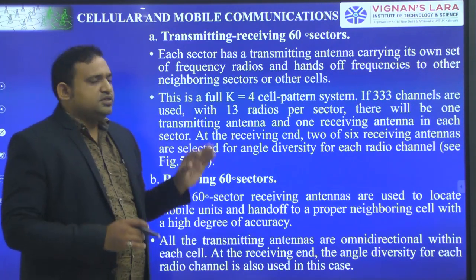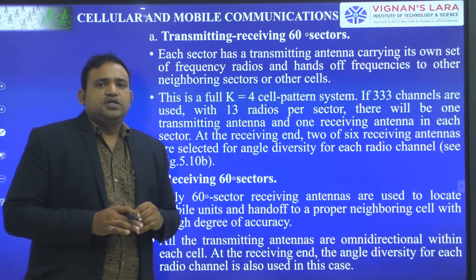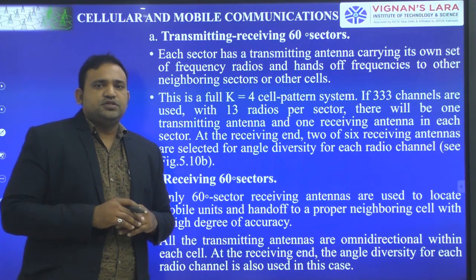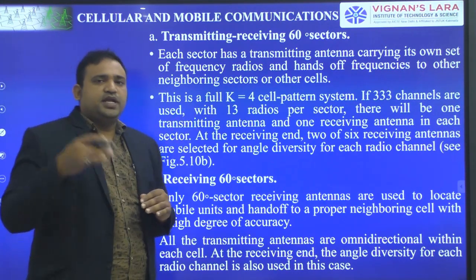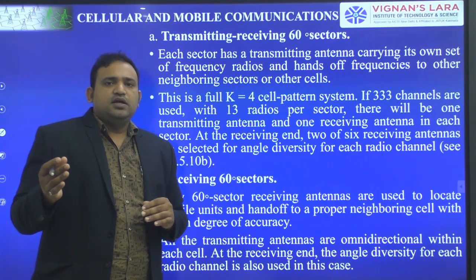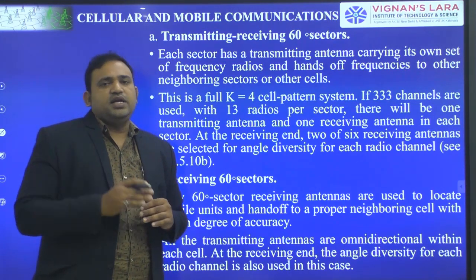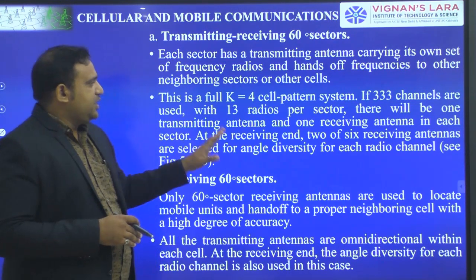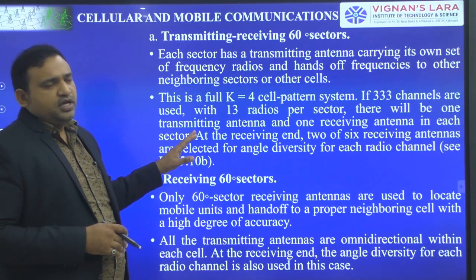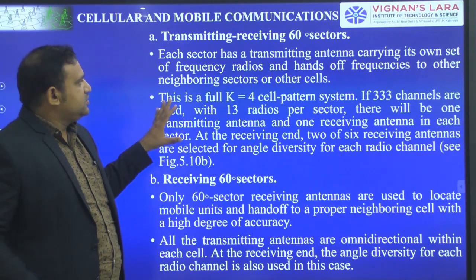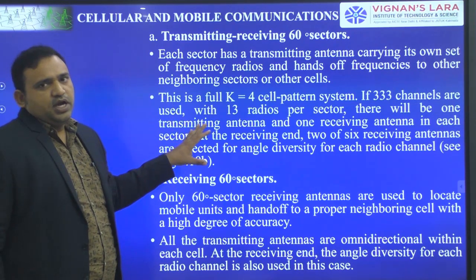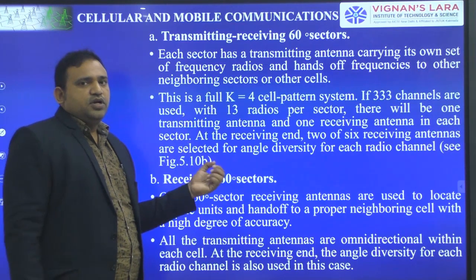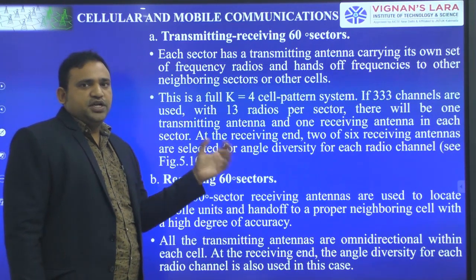In the simple K equal to 4, 60-degree sector case using two approaches, one transmitting and one receiving antenna are used per sector — one is the transmitting and one is the receiving. Hand-off is supported, and if there are 333 channels, we are going to use only 30 radio channels.